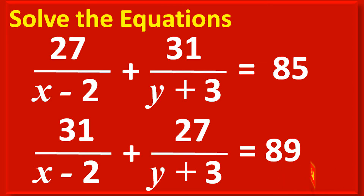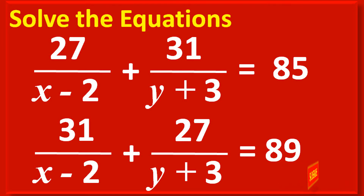Friends, now we have to solve the equations 27/(x-2) + 31/(y+3) = 85, and 31/(x-2) + 27/(y+3) = 89.